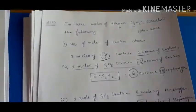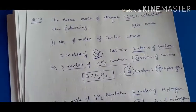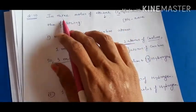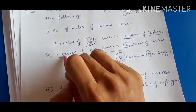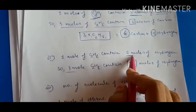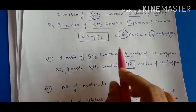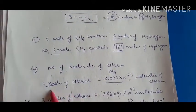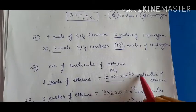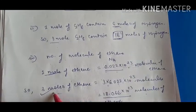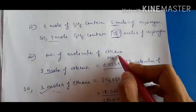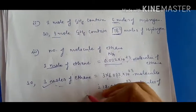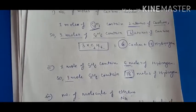To summarize question ten: in 3 moles of ethane, there are 6 carbon atoms (3 × 2), 18 hydrogen atoms (3 × 6), and 18.066 × 10²³ molecules of ethane (3 × 6.022 × 10²³). So we simply cross-multiply moles by the per-molecule count or Avogadro's number.